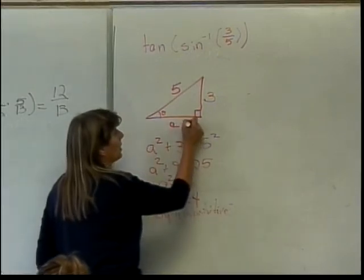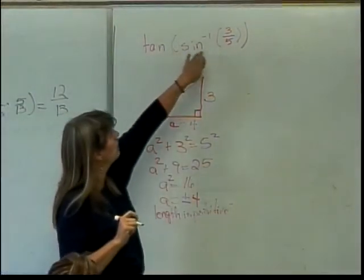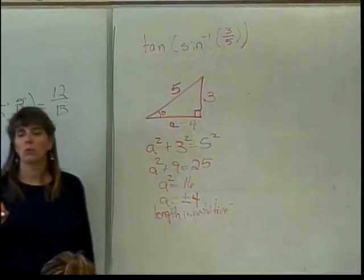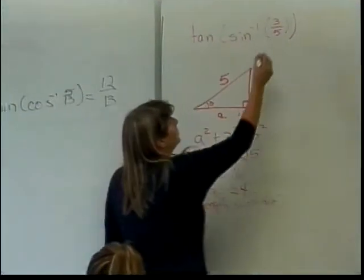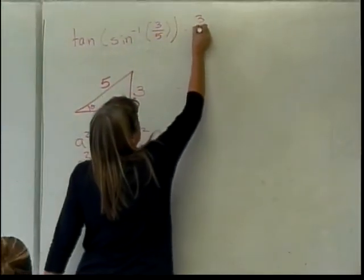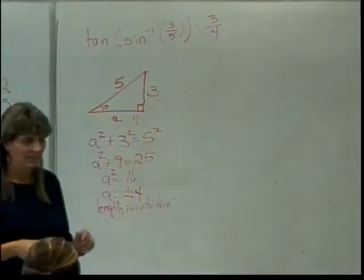So this side is positive 4. So the tangent of the sine inverse of 3 fifths is going to be what? 3 over 4. 3 over 4. Okay.